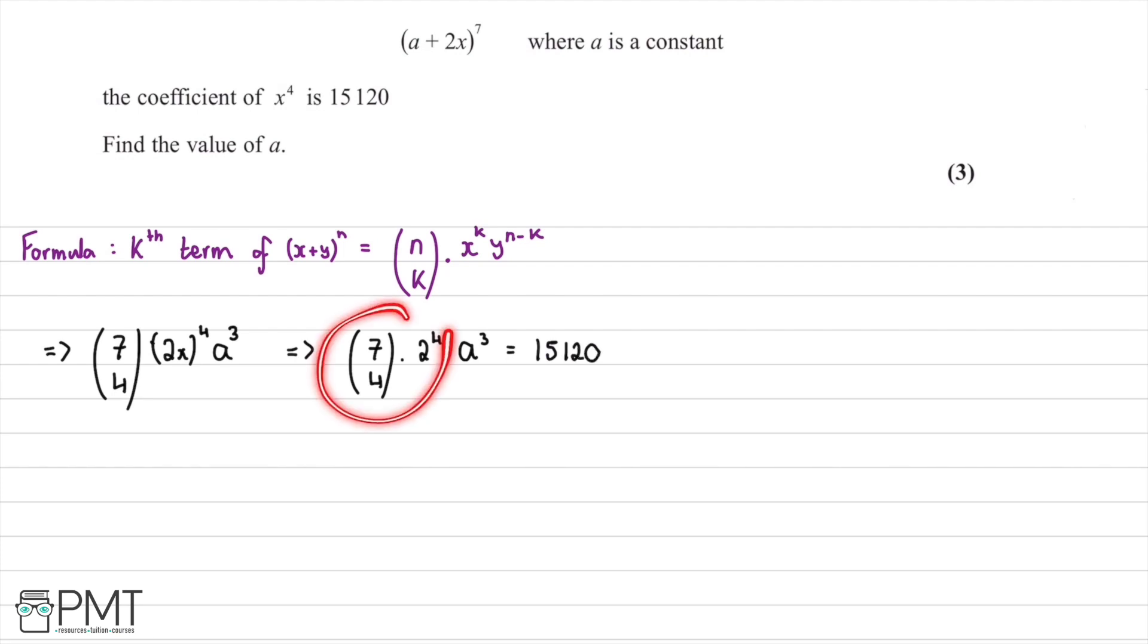If we put this into our calculator, 7 choose 4 multiplied by 2 to the power of 4 equals 560. So we have 560 a cubed equals 15,120.